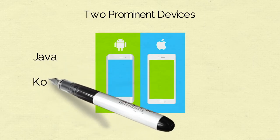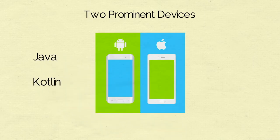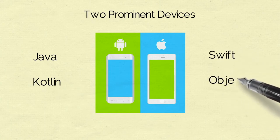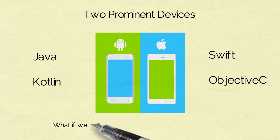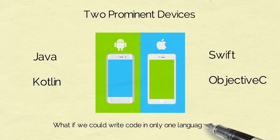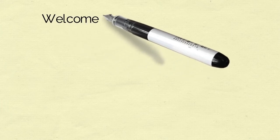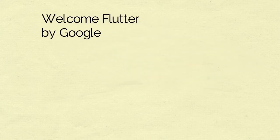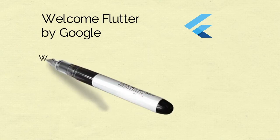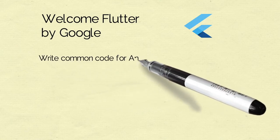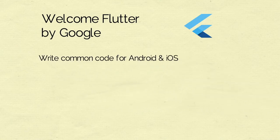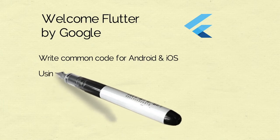To write code for Android, you need to learn either Java or Kotlin, or for iOS, Swift or Objective-C. Now we get to the same questions again — what if you could write the same code for both platforms? So here we should welcome Flutter by Google. Flutter is a framework which allows us to write common code for Android and iOS — most of it.